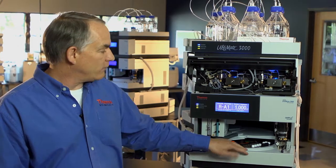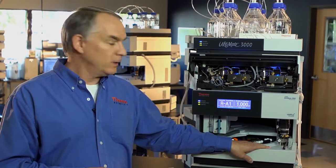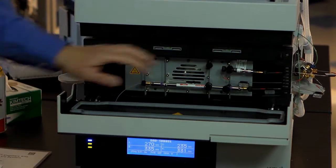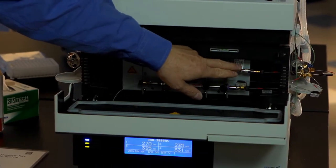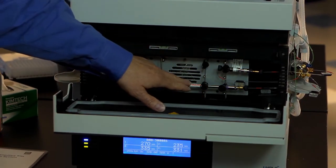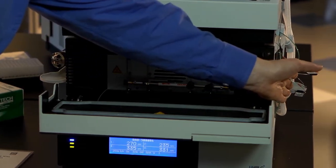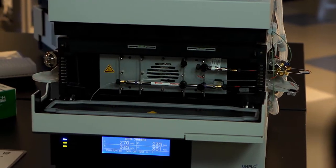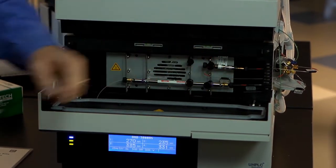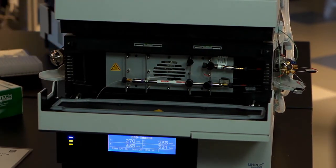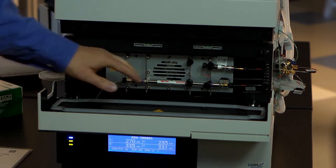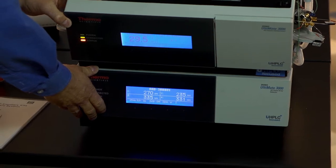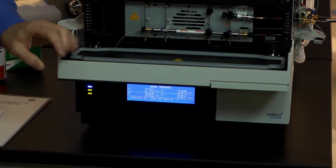We also have a split loop well plate sampler. We have a thermostated column compartment that houses the two columns, the solid phase extraction column and the analytical column, and has integrated on the side a two position six port switching valve that will allow us to switch back and forth between the sample loading column and the analytical column. And finally we have a stackable detector on the bottom. In this case it's a diode array detector.